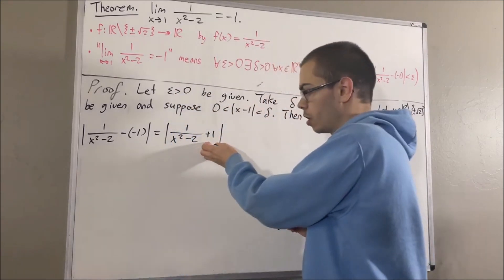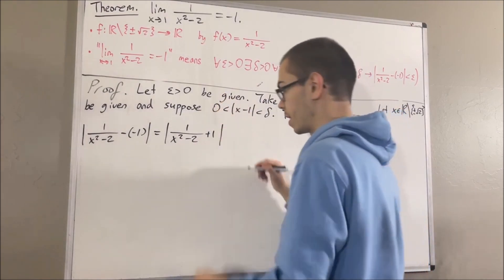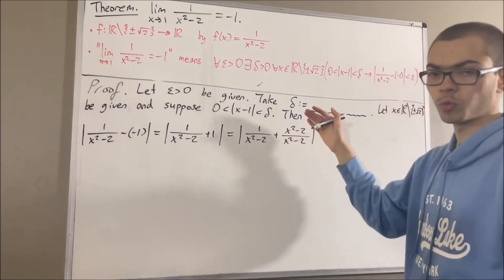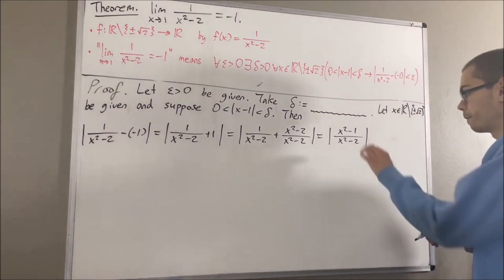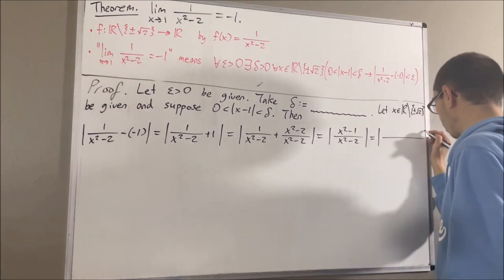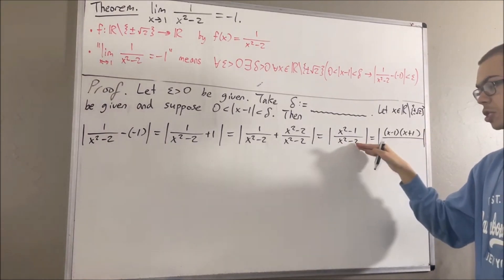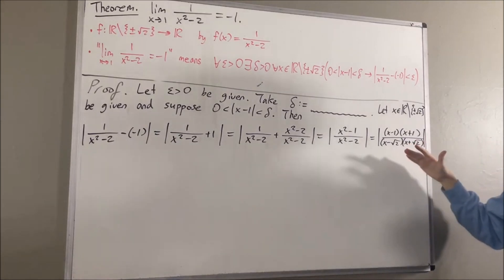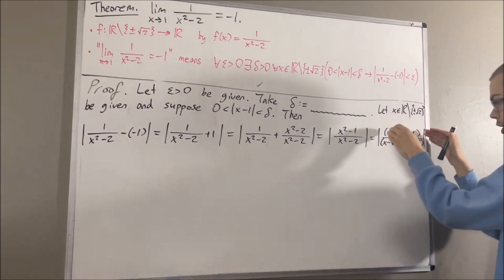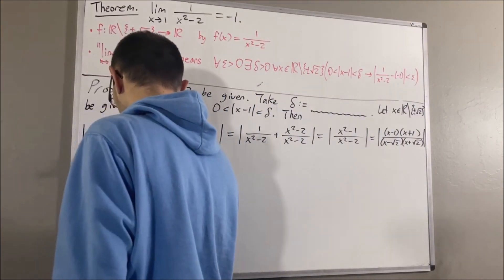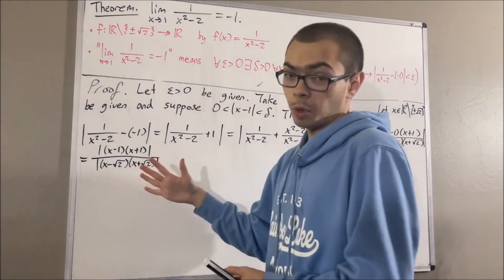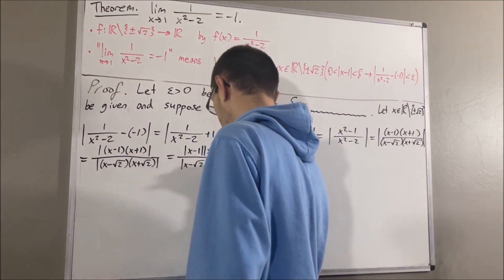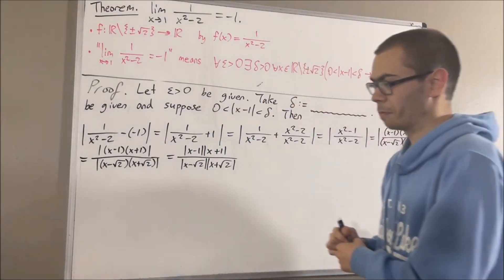Now let's combine these two terms into a single fraction. We can rewrite 1 as x squared minus 2 over x squared minus 2, and now that we have common denominators, we can add the two numerators to get x squared minus 1 over x squared minus 2. Factoring the numerator gives us x minus 1 times x plus 1, and factoring the denominator gives us x minus square root of 2 times x plus square root of 2. A property of absolute values tells us the absolute value of a fraction equals the absolute value of the numerator over the absolute value of the denominator, and the absolute value of a product equals the product of absolute values.